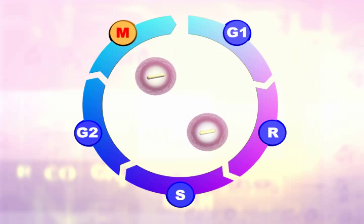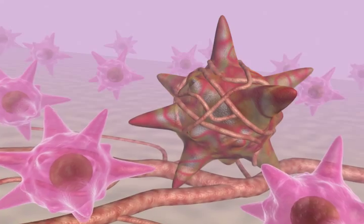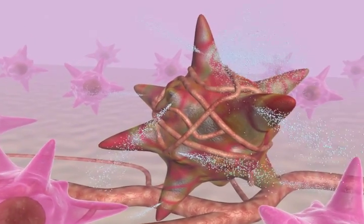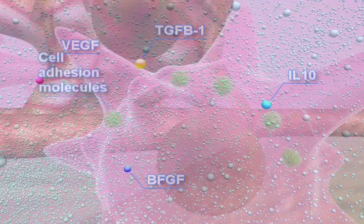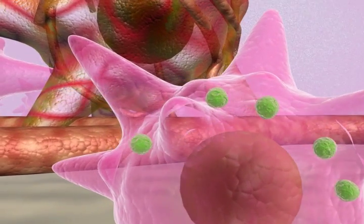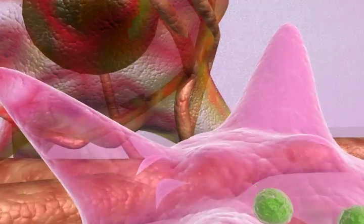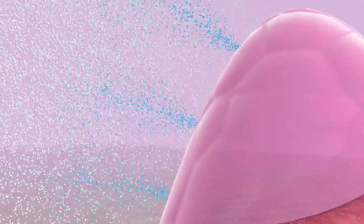In contrast to normal human melanocytes, which produce and respond only to a limited number of growth factors, melanoma cells grow autonomously and secrete a plethora of cytokines and growth factors. This aberrant production of multifunctional factors allows cancerous cells to proliferate independently of external growth factors. Cytokine production by melanoma cells induces tumor cell proliferation, stimulates angiogenesis and cell adhesion molecules.